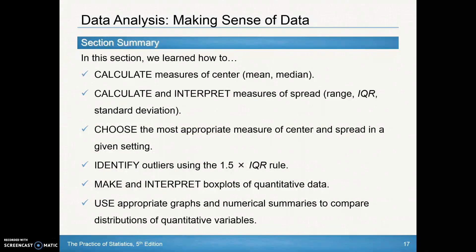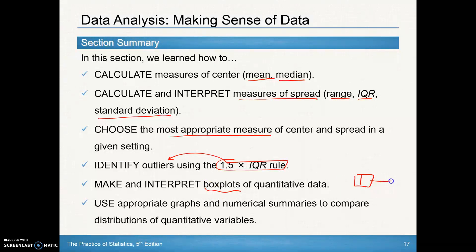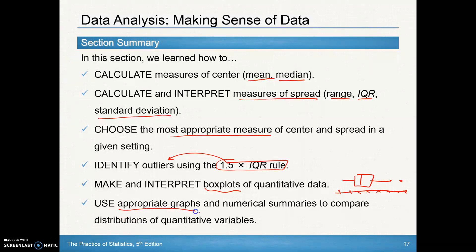Summary of what we learned in section 1.3: measures of center — mean and median; measures of spread — range, IQR, and standard deviation. Know when to use the most appropriate measure of center and spread. Remember the 1.5 IQR rule to help identify outliers — check how far below Q1 and how far above Q3 values fall. You should know how to make box plots — box and whisker plots — with data points, potential outliers, and a scale along the bottom. Use appropriate graphs and numerical summaries to compare distributions of quantitative variables.